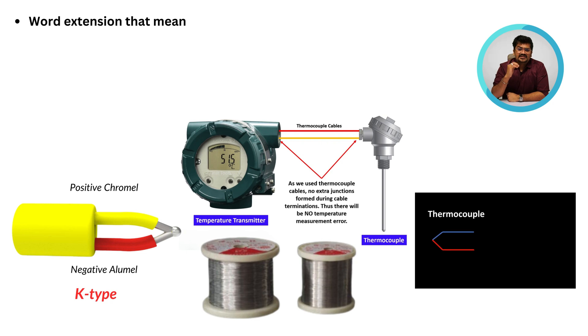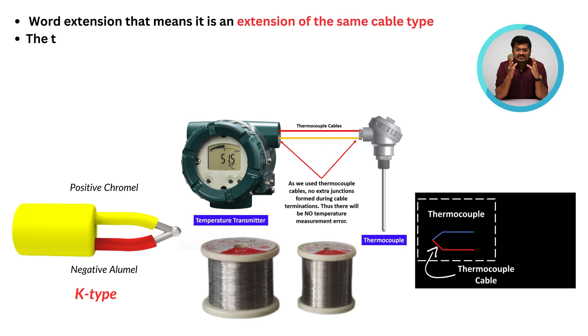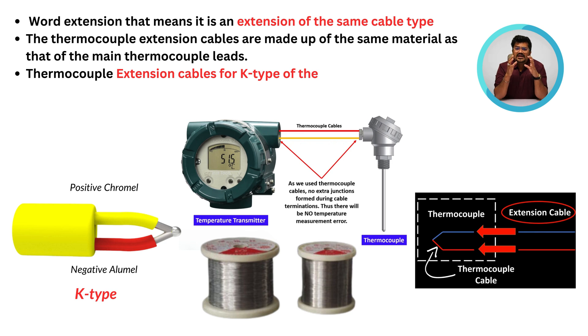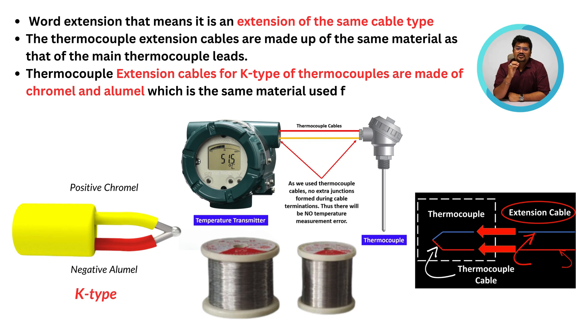Let's understand the extension cable. From the word extension, that means it is an extension of the same cable type. The thermocouple extension cables are made up of the same material as that of the main thermocouple leads. Thermocouple extension cables for K-type thermocouples are made up of Chromel and Alumel, which is the same material used for the construction of K-type thermocouples.